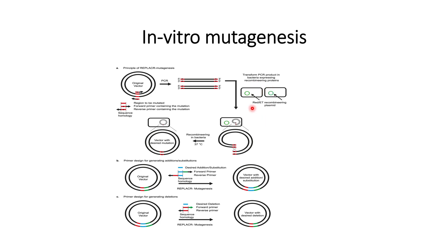This is briefly how in vitro mutagenesis can be performed in the lab with the help of bacteria containing recombineering proteins such as Red ET, Red gamma, or Red beta proteins. If you need to understand this in detail, you can refer to the reference provided in the description. Thank you for your time.